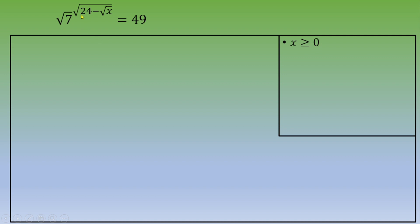Then we have 24 - √x, and this quantity must be greater than or equal to 0. If you rearrange, you get √x ≤ 24.